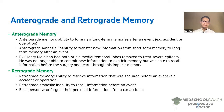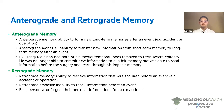One thing to note is that amnesia is actually pretty complex, so it's rare that someone is going to have complete amnesia. For example, while Henry Moliacin was unable to form new explicit memory, he was able to recall information before the surgery and he was still able to learn through his implicit memory.